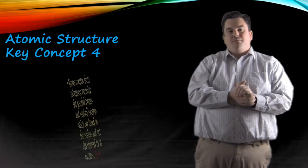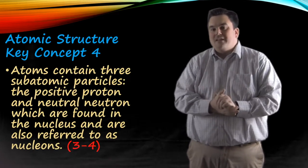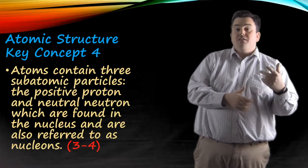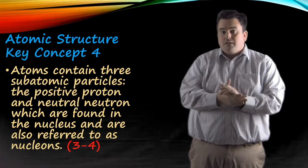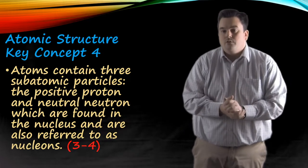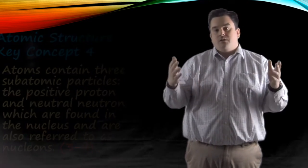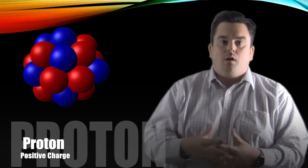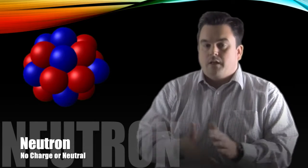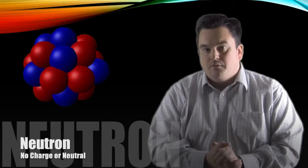Atomic structure, key concept four. Atoms contain three subatomic particles. The positive proton and the neutral neutron, which are found in the nucleus, are also referred to as nucleons. Now, this really is straightforward, guys. The proton, you want to remember, has a positive charge. This is what gives the nucleus its overall positive charge. Neutral neutrons, which implies neutral, has a charge of zero.